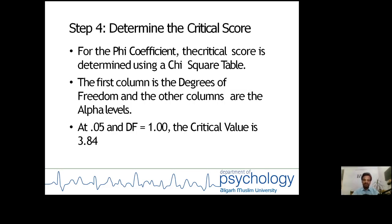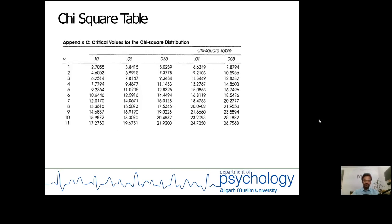Step four: Determine the critical value. As you know, in traditional method we use to go for the statistical tables to see the critical value of the test based on degrees of freedom. For the phi coefficient, the critical value is determined using a chi-square table. The first column is the degree of freedom and other columns are the alpha levels. At 0.05 level of significance with one degree of freedom, the critical value is 3.84.